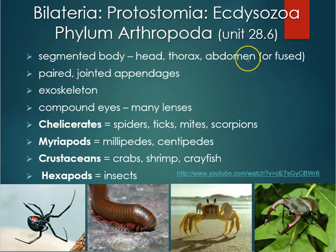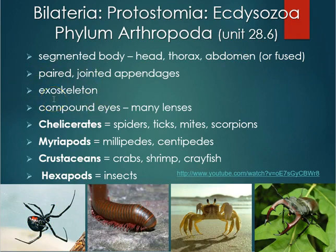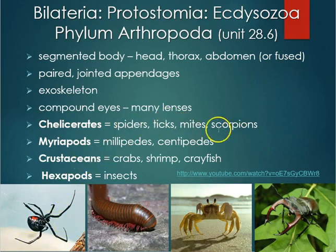Arthropods have a segmented body — head, thorax, and abdomen — though in spiders some body parts are fused so they don't have those three distinct regions. They have paired jointed appendages and exoskeletons they must shed to grow, as well as compound eyes. The chelicerates — spiders, ticks, mites, and scorpions — have pinching mouthparts or appendages used to subdue prey.